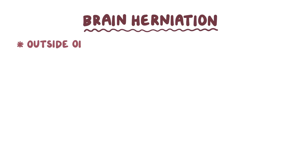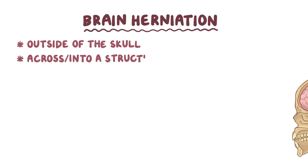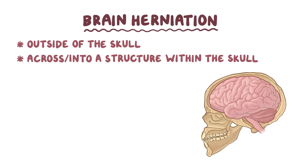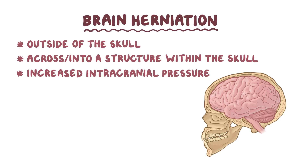Brain herniation is what it's called when some brain tissue moves outside of the skull, or moves across or into a structure within the skull. Brain herniation typically happens in response to increased intracranial pressure, which refers to a high pressure within the skull. An intracranial pressure above 15 mm of mercury is considered high.